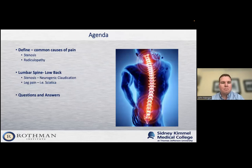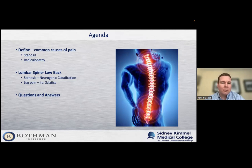Today I'm going to try to make things fairly simple and talk about two of the common causes of pain, two of the common reasons people come and see me as a spine surgeon. We're going to talk about stenosis and radiculopathy — how stenosis leads to neurogenic claudication and how leg pain or radiculopathy, commonly sciatica, occurs and how we treat it. I'll be happy to answer any questions at the end.